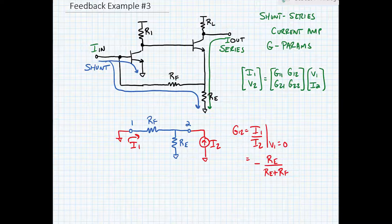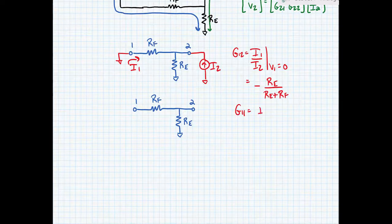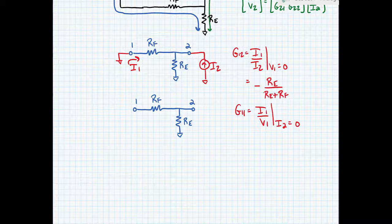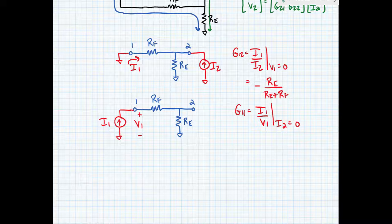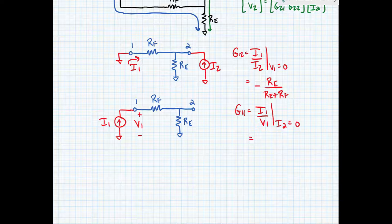Next, let's find G11. G11 is equal to I1 over V1 when I2 equals 0. So here we're going to leave port 2 open, place a current source I1, and measure the voltage that would develop across V1. That voltage is just the current times the resistance, so G11 is equal to 1 divided by (R_E + R_F).